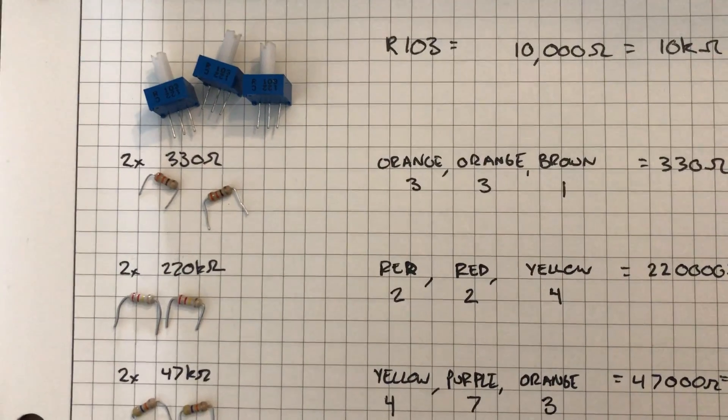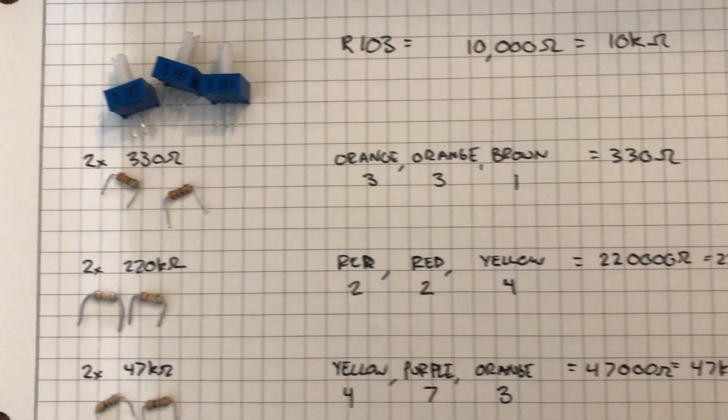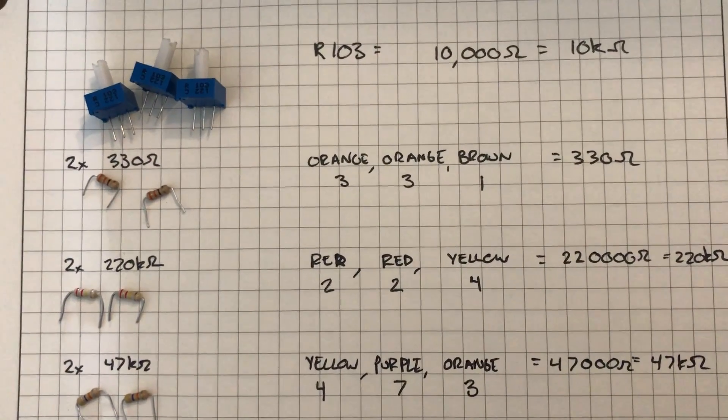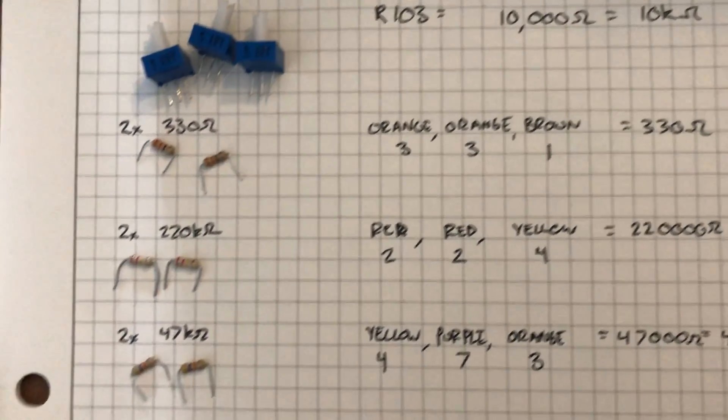Next I needed two 330 ohm resistors, so those are cut, bent, and trimmed ready to go. I know they're 330 ohms because the color code is orange orange brown, which is 330 ohms.